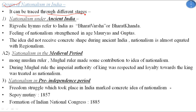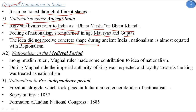The origin of nationalism in India can be traced through four stages. The first stage is nationalism under ancient India: Rigvedic hymns refer to India as 'Bharatvarsha' or 'Bharatkhand.' The feeling of nationalism was strengthened in the age of the Mauryas and Guptas, though the idea did not receive a concrete shape during ancient India, as nationalism was almost equated with regionalism in this era.